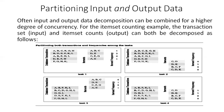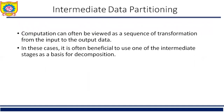So this is very important: sometimes, depending upon the application, we need to select the output data, the input data, or both input and output data for partitioning. Sometimes it is also required to use intermediate data for partitioning. Computation can often be viewed as a sequence of transformations from input to output data — for example, in matrix-matrix multiplication, matrix-vector multiplication, or a database query. It is often beneficial to use one of the intermediate stages as a basis for decomposition.